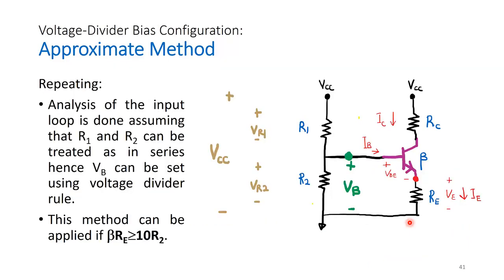To summarize: analysis of the input loop using the approximate method assumes R1 and R2 are in series so VB is set by voltage divider rule. Knowing VBE = 0.7 V, we find VE, then IE = VE/RE, and IC ≈ IE. From IC = beta·IB we can find IB. This method is valid only if beta·RE > 10·R2.